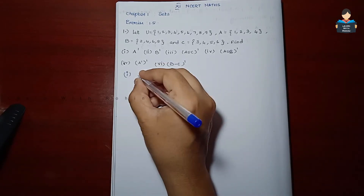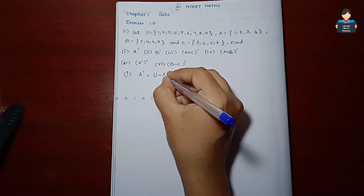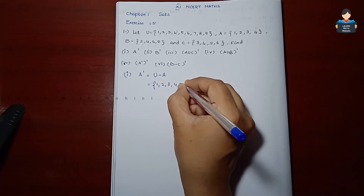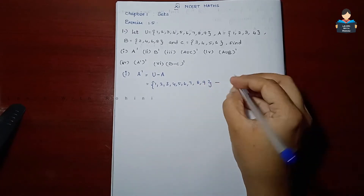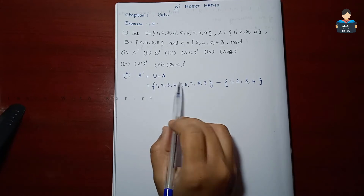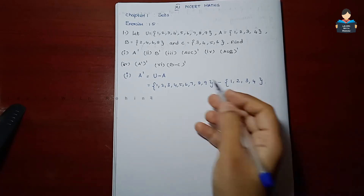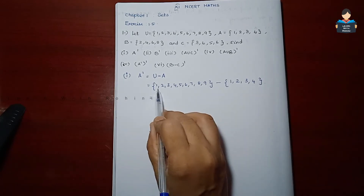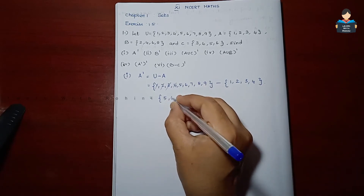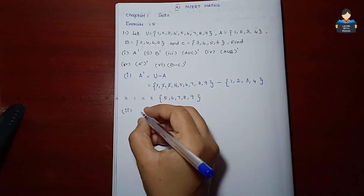Let's solve 1 by 1. In the 1st subdivision, A complement is asked. A complement means Universal set minus A. Universal set has elements 1, 2, 3, 4, 5, 6, 7, 8, and 9. Minus A has elements 1, 2, 3, and 4. So U minus A — elements of A that repeat in U are eliminated (1, 2, 3, 4), and the remaining elements are 5, 6, 7, 8, and 9. So A complement answer is {5, 6, 7, 8, 9}.